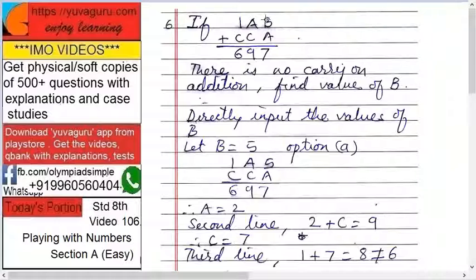No carry-on addition means B plus A is 7 only, it is not 17 or anything. So what you do is directly try to put the values of B whatever are given. Now these options 5, 4, 3, 2 would be given to you in the exam, so directly try each value of B and try to solve it.